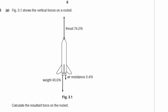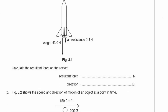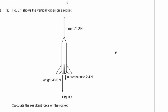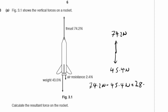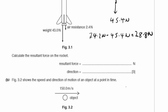Part 3: figure 3.1 shows the vertical forces on a rocket. We have a thrust of 74.2 newtons, a weight of 43 newtons, and air resistance of 2.4 newtons. Calculate the resultant force on the rocket. We have a force up and forces down: 74.2 newtons upwards, and downwards 43 plus 2.4, that's 45.4 newtons. So 74.2 minus 45.4 gives us 28.8 newtons, and the direction is upwards.